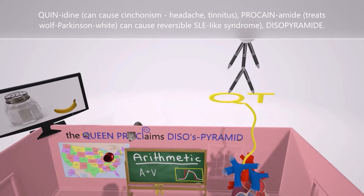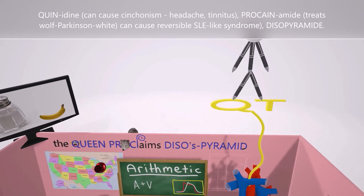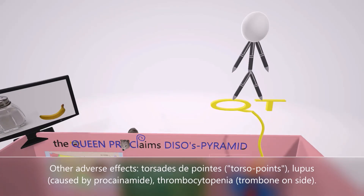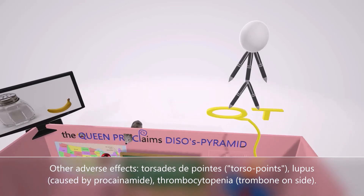Due to the prolonged QT interval, class 1A drugs can trigger a type of arrhythmia called torsade de pointes, which means 'twisting of points.' That's why we have this torso made of ball point pens — the torso of points for torsade de pointes.